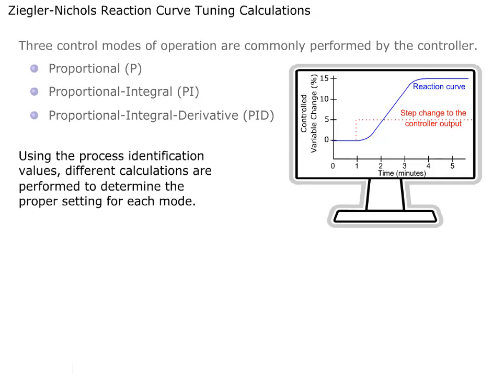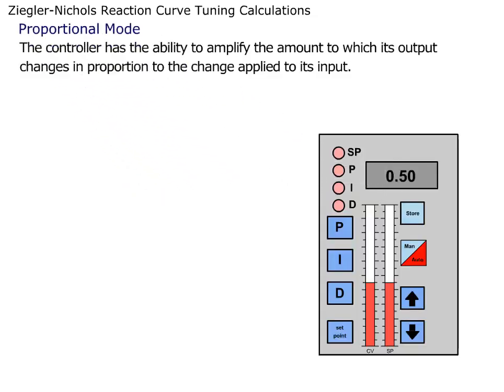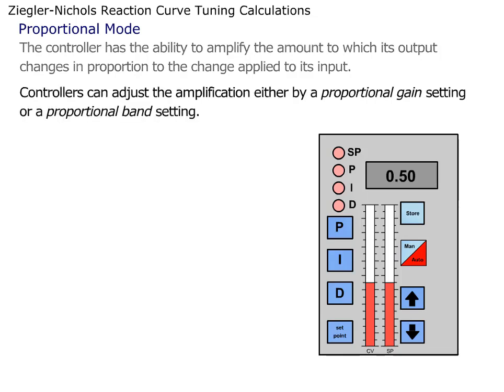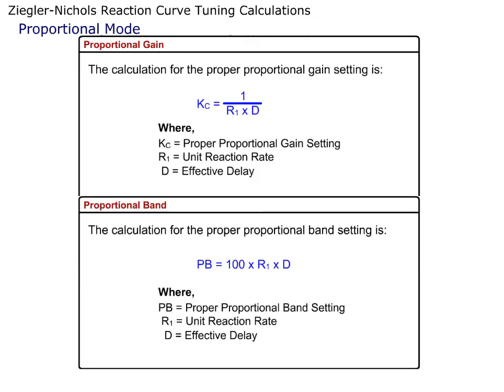Using the Process Identification values, different calculations are performed to determine the proper setting for each mode. The controller has the ability to amplify the amount to which its output changes in proportion to the change applied to its input. Controllers can adjust the amplification either by a Proportional Gain setting or a Proportional Band setting. The Proportional Gain and Proportional Band formulas are shown here.